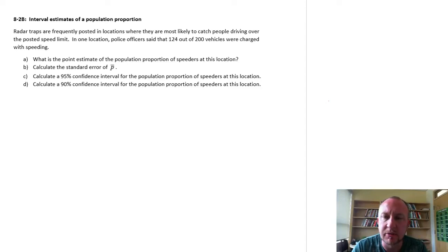Welcome back. Here's another exercise. We're going to look at calculating an interval estimate for an unknown population proportion. Here we're looking at radar traps that they like to put up where they're going to catch the most speeders. In one location, police officers said that 124 out of 200 vehicles were charged with speeding. So part A, what is the point estimate of the population proportion of speeders at this location?